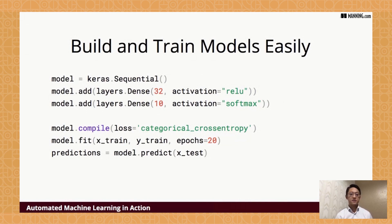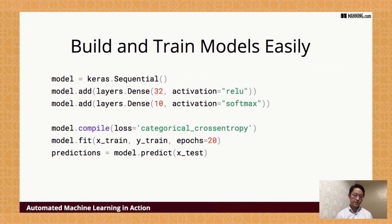We specify the activation functions, the same for the second layer. With the compile function we can easily specify the loss function, and with the fit function we train it for 20 epochs. After training, you can easily do predictions with this model. So Keras encapsulates the model building and training process.